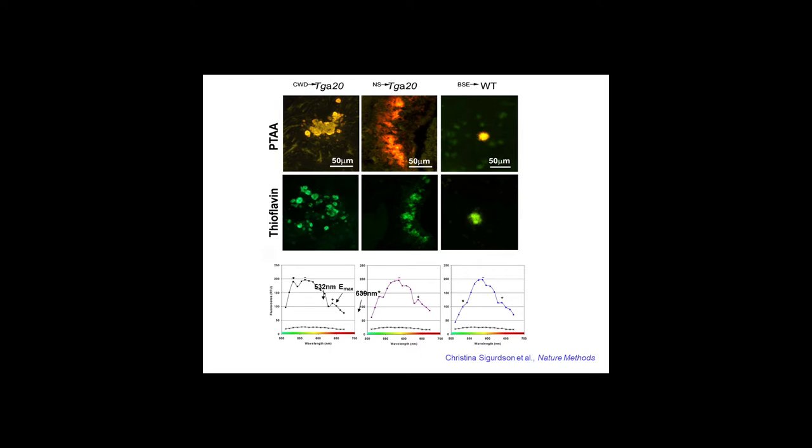So, bottom line, so this was the work of Peter Nielsen, when he was a postdoc with me, and Christina Sigurdsson, who is now a professor at UCSD. They were both postdocs at the time, and they actually pulled it out. And so they had a beautiful paper in Nature Methods, where they actually showed that you get different colors from different prion strains. And that was really the first demonstration that the strain properties, the strainness of the prion, could actually be encoded within the quaternary structure of the protein.